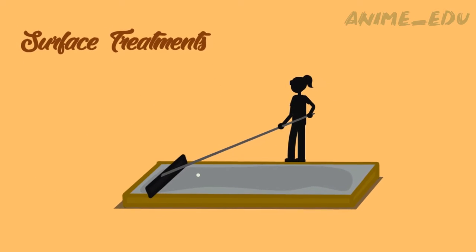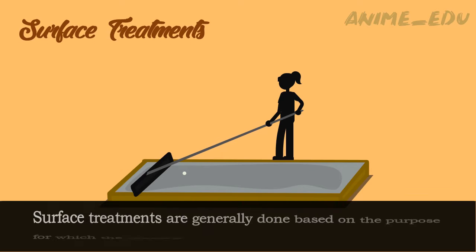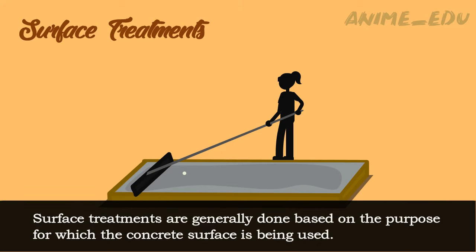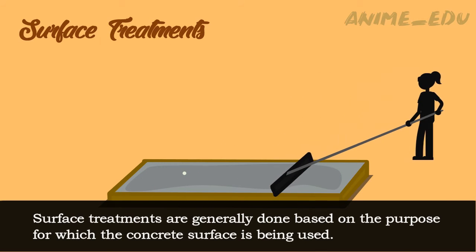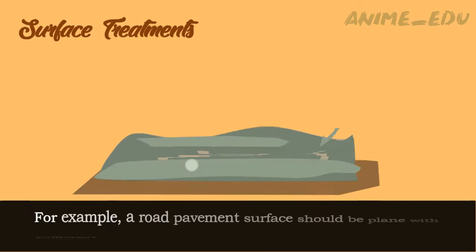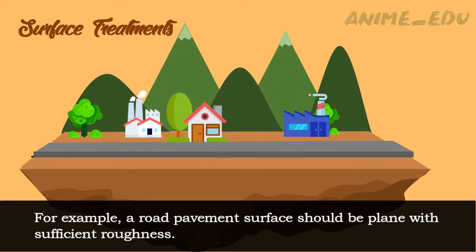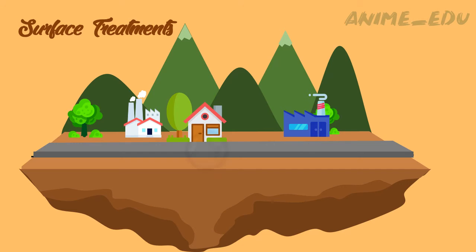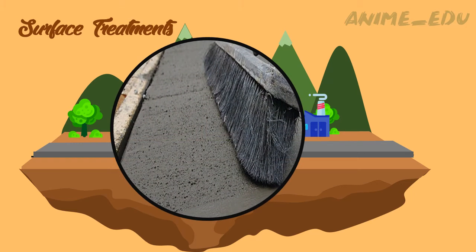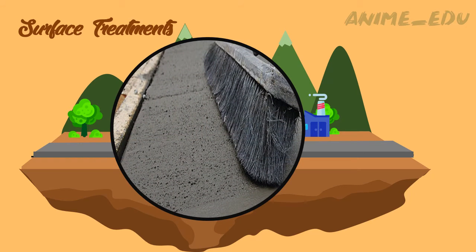Surface Treatments. Surface treatments are generally done based on the purpose for which the concrete surface is being used. For example, a road pavement surface should be plain with sufficient roughness. In this case, surface treatment is done with the help of a broom or thick brushes to make the surface rough.